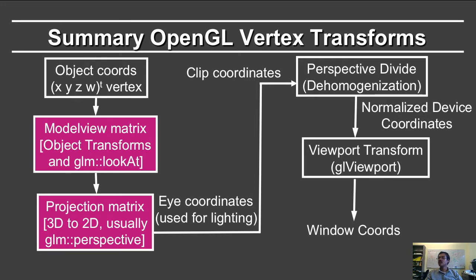Then you go to the perspective divide or de-homogenization. You have clip coordinates, and you can clip to the minus 1 to 1 range. Then you can do the perspective divide or de-homogenization. You get normalized device coordinates, and then you do a viewport transform so that it finally appears in the window.